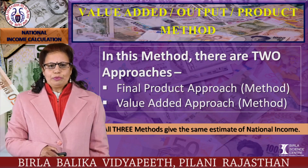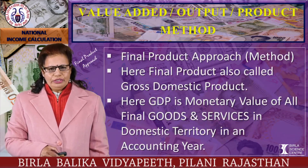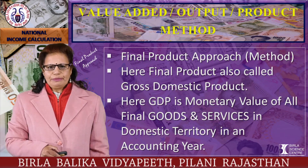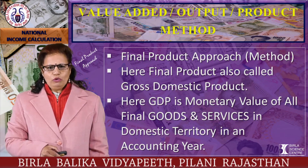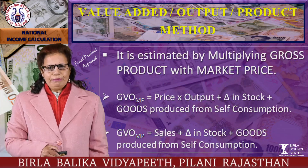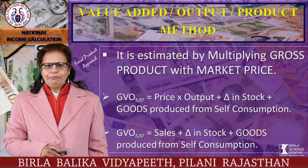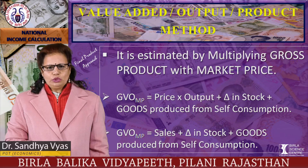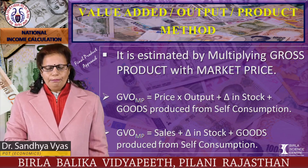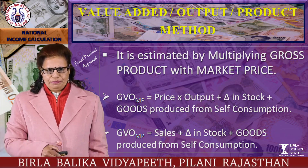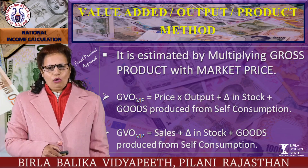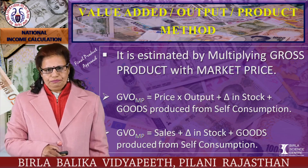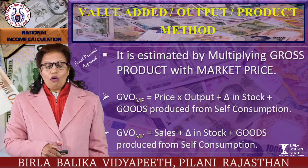In the value-added method there are two approaches: final product approach and value-added approach. In the final product approach, GDP is the monetary value of all final goods and services in domestic territory in an accounting year. It is estimated by multiplying gross product with market price. GVO (gross value output) at market price equals price into output, plus change in stock, plus goods produced for self-consumption. GVO at market price is also known as sales plus change in stock plus goods produced for self-consumption.